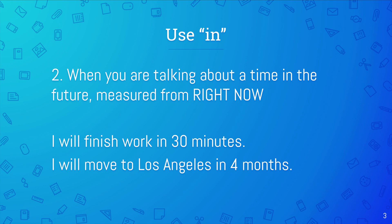Like that first example: I will finish work in 30 minutes. Right now it is 10:15 p.m. If I said I will finish work in 30 minutes, that means I will finish work at 10:45 p.m., because that is 30 minutes from right now. That second example: I will move to Los Angeles in four months. So now it's April — this sentence would mean that I will move to Los Angeles in August.